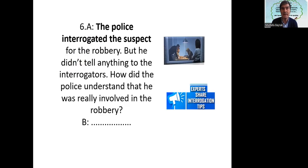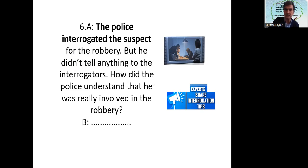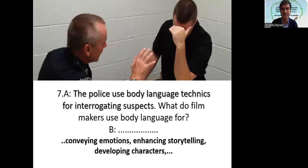The police interrogated a suspect for a robbery, but he didn't tell anything to the interrogators. How did the police understand that he was really involved in the robbery? Of course the police used a lot of criminal techniques, and in the end also used body language techniques to prove that the person was really involved in the crime. Experts share interrogation tips. The police used body language techniques for interrogating suspects.